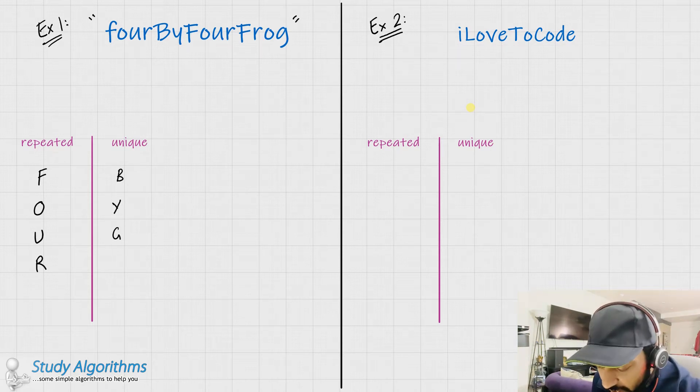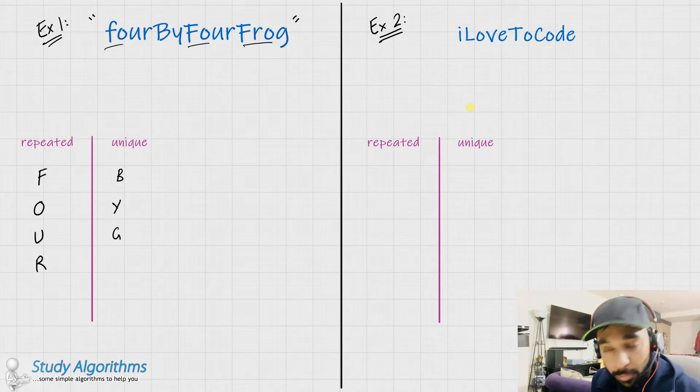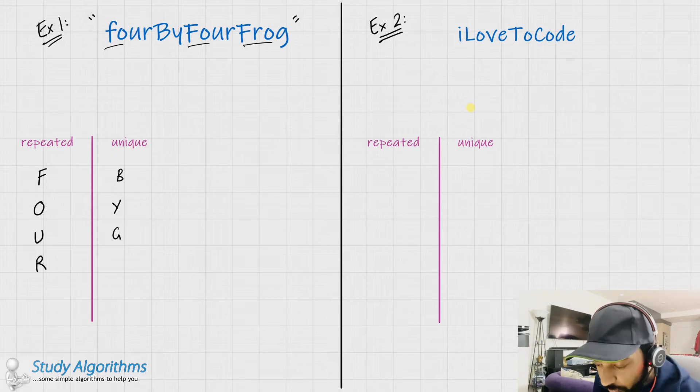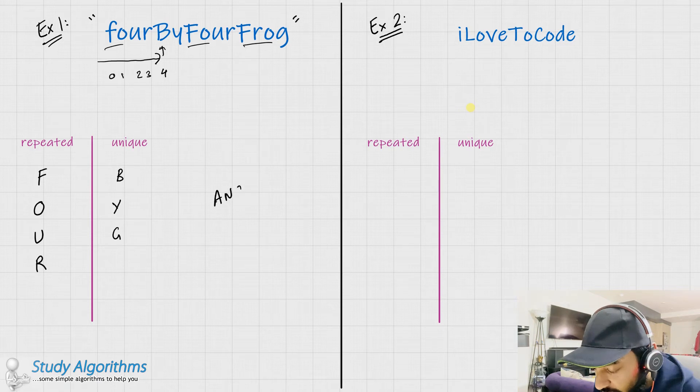So, as you can see, f, o, u, r are repeated over here, over here, and over here, while b, y, g are the unique characters. So, given the problem statement, you need to tell me what is the index of the first character that is unique. So, if you start from the left, you would see that the first unique character is b, and its index is 4. And hence, your answer should be 4, because b was your first unique character.